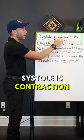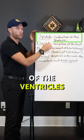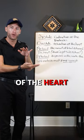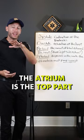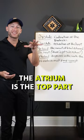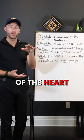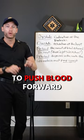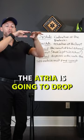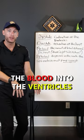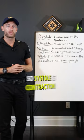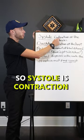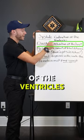Systole is contraction of the ventricles. Remember, the ventricles are the bottom part of the heart, and the atrium is the top part of the heart. The ventricles are going to push blood forward, while the atrium is going to drop the blood into the ventricles. So, systole is contraction of the ventricles.